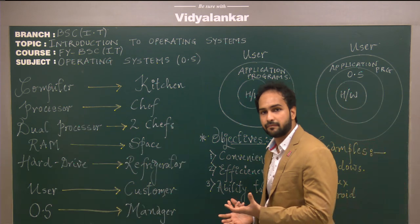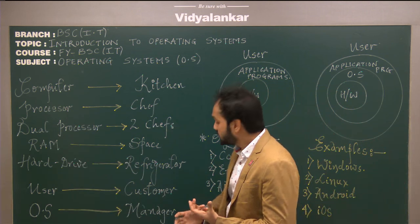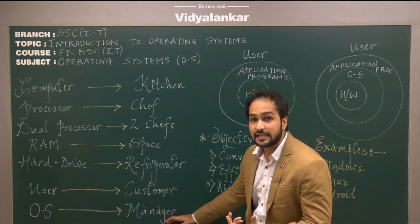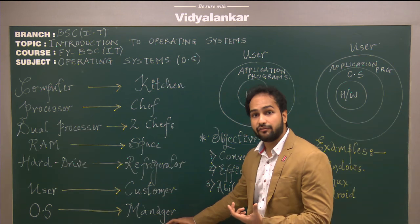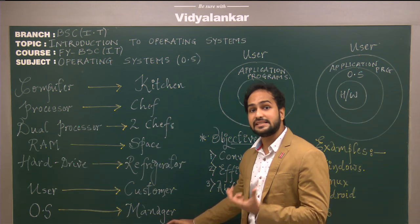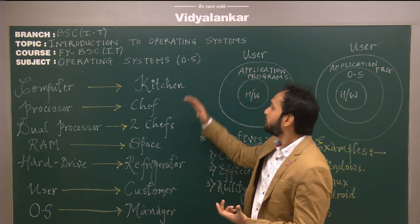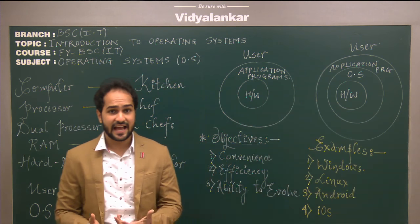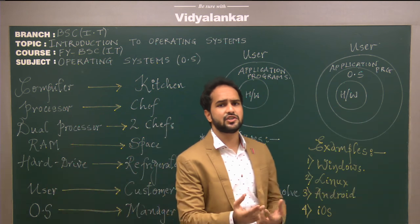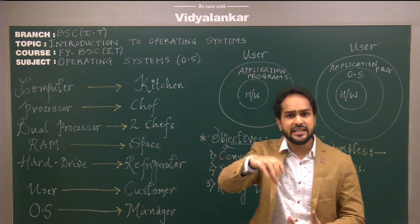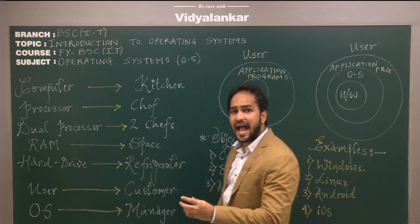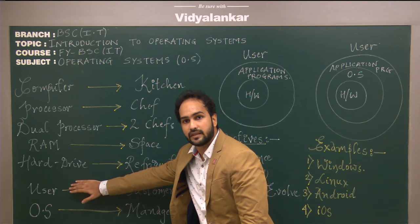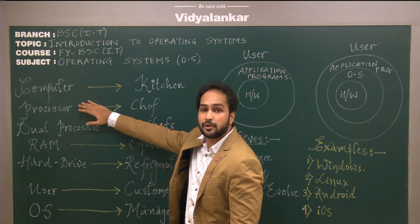So where is the operating system? The operating system is just like the manager of the restaurant. The manager ensures that the food is properly served to the customer from the kitchen. So the operating system is an intermediator, an interface, an agent between two entities — the user and the computer processor.